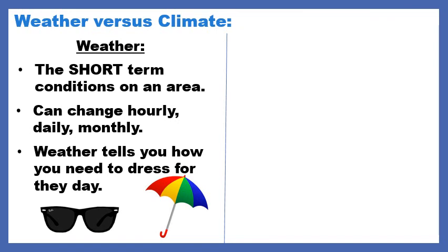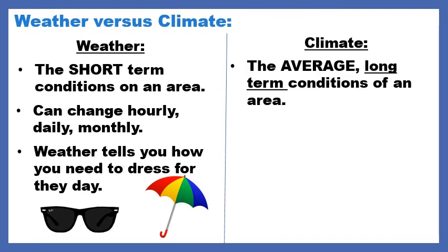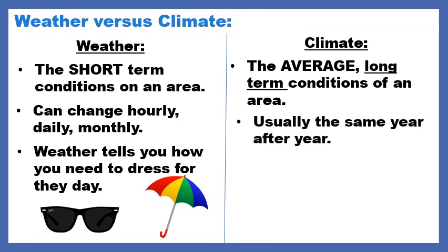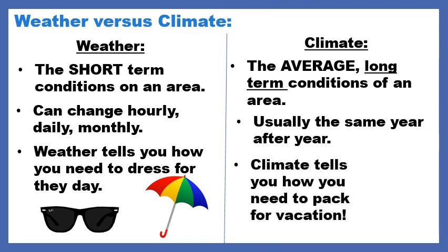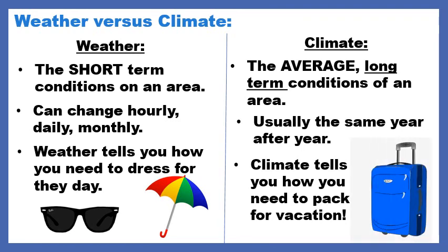This could change within 20 minutes if a big cloud comes over and blocks the sun. So if weather is short-term, then climate is going to be longer-term. Climate is the average long-term condition of an area — it's usually the same year after year with maybe tiny changes. I like to say that climate tells you how you need to pack for vacation. For example, if you're going to Australia during Christmastime, you don't know exactly what the weather will be like, but the climate tells you that you don't need to bring your big fluffy winter coat because it's going to be hot.